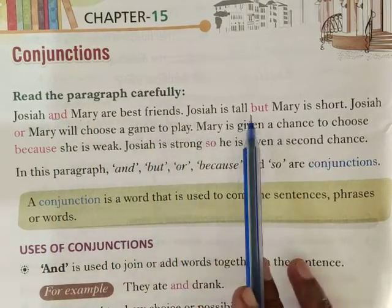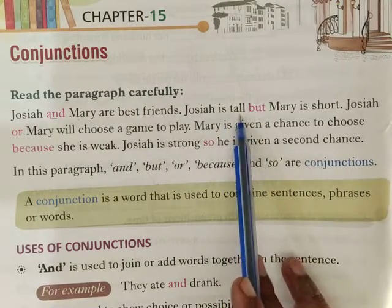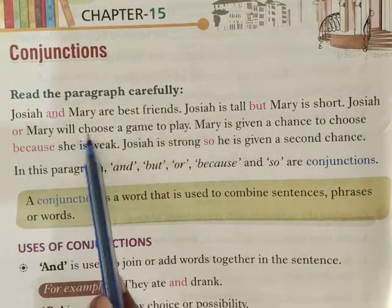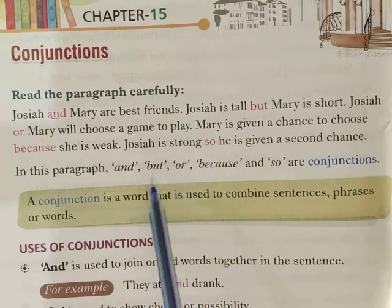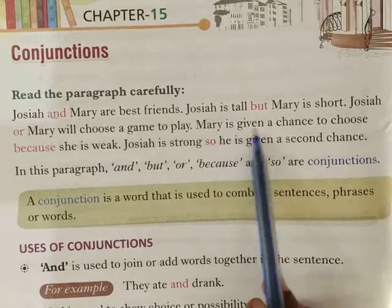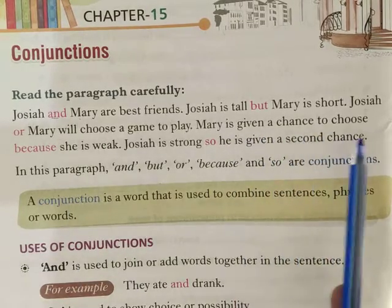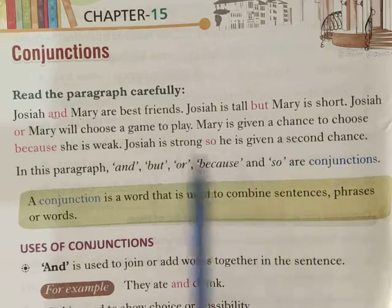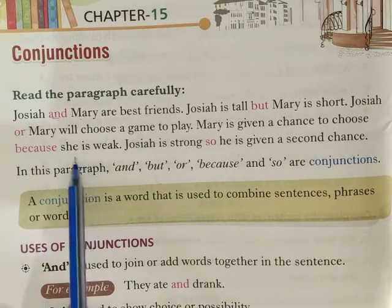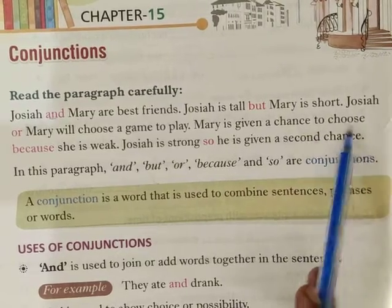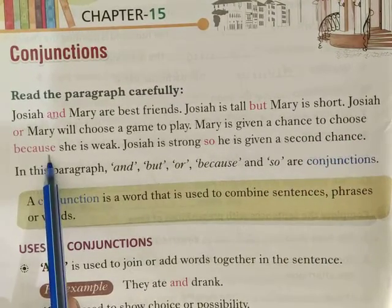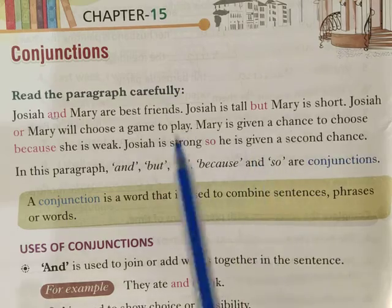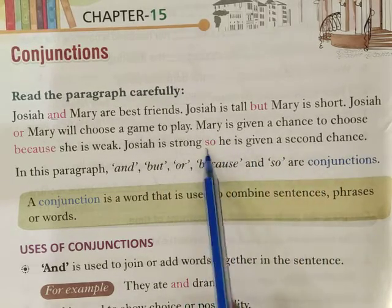Josiah and Mary are best friends. Josiah is tall but Mary is short. Josiah and Mary will choose a game to play. Josiah or Mary will choose a game to play — Mary is given a chance to choose because she is weak. Josiah is strong, so he is given a second chance.